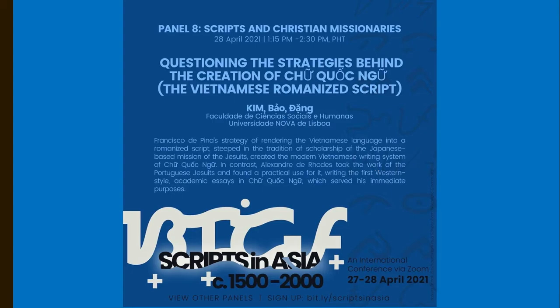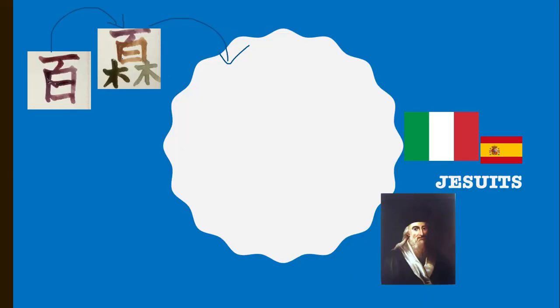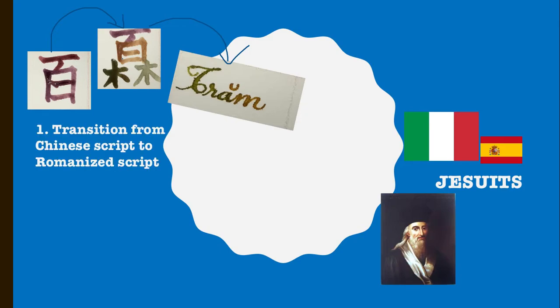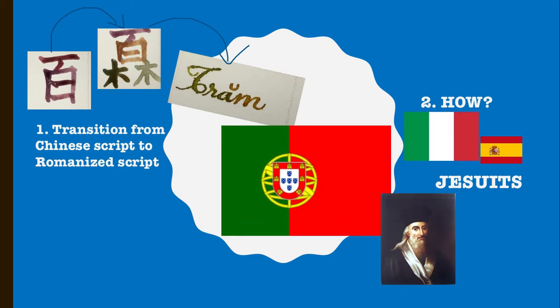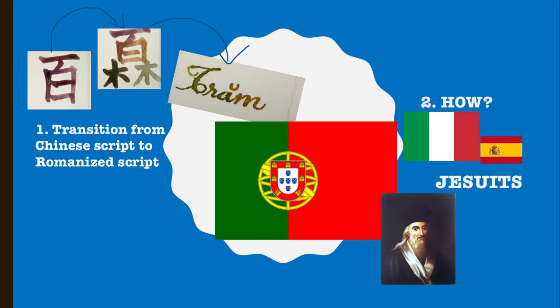Hello everyone, my name is Kim. Today I want to talk about how Vietnamese people transitioned from square script to ABC Latin — the creation of Chữ Quốc Ngữ, the Vietnamese romanized script. I will talk about the transition from Chinese and Chinese look-alike scripts to the new romanized script, and the involvement of the Society of Jesus, the influence of the Portuguese group, and one particular French missionary, Alexandre de Rhodes.